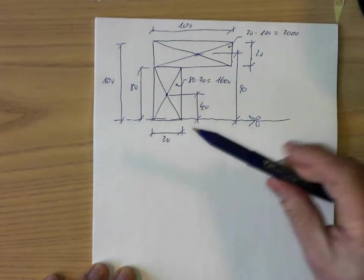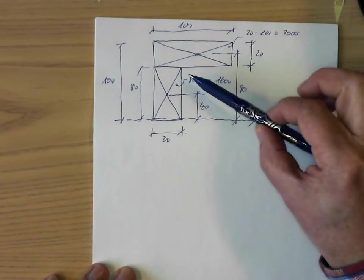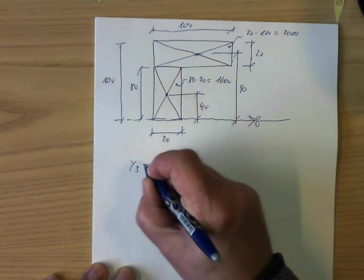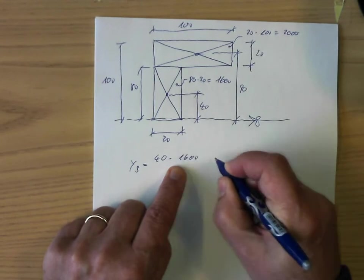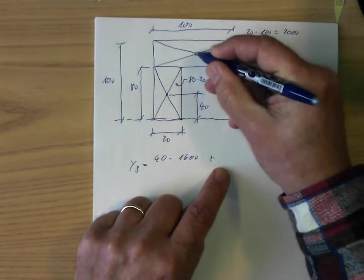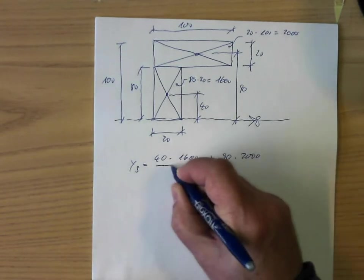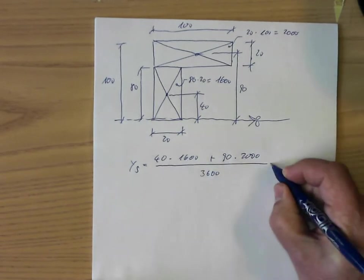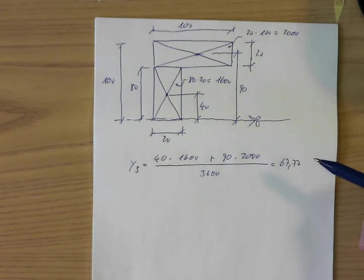Now we are interested in the center of gravity of this upper construction. We can calculate the plastic section modulus. So Ys — Y is going up — is then the distance 40 times the area 1,600, plus 90 times the area 2,000, divided by the whole area, which is 3,600 (that is 2,000 plus 1,600). If I calculate it, I get 76.77 as the Y-coordinate of this center of gravity.